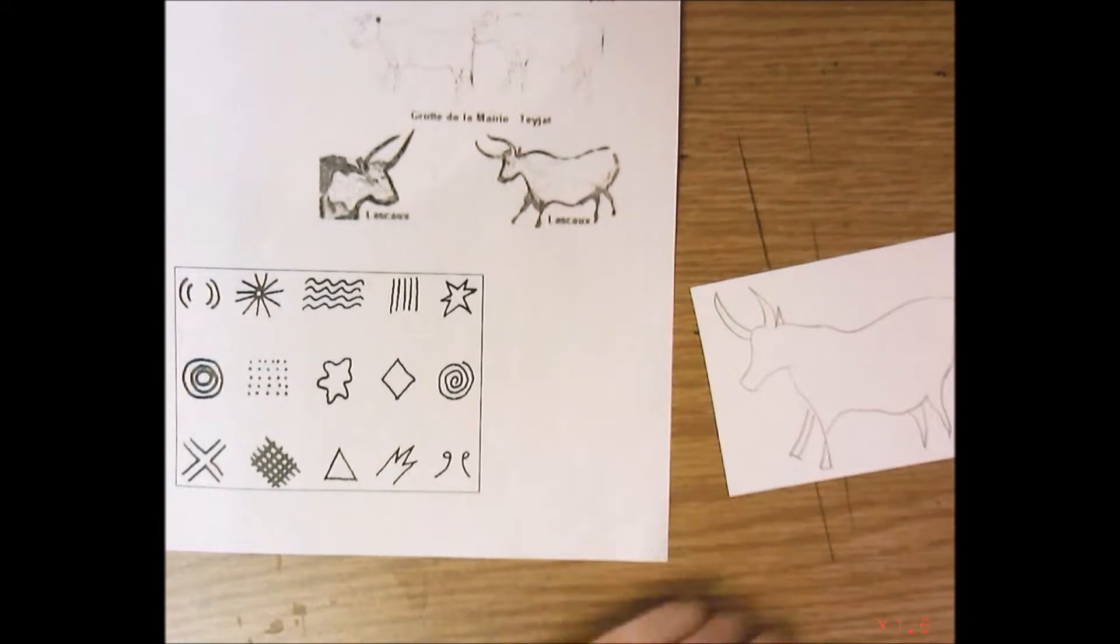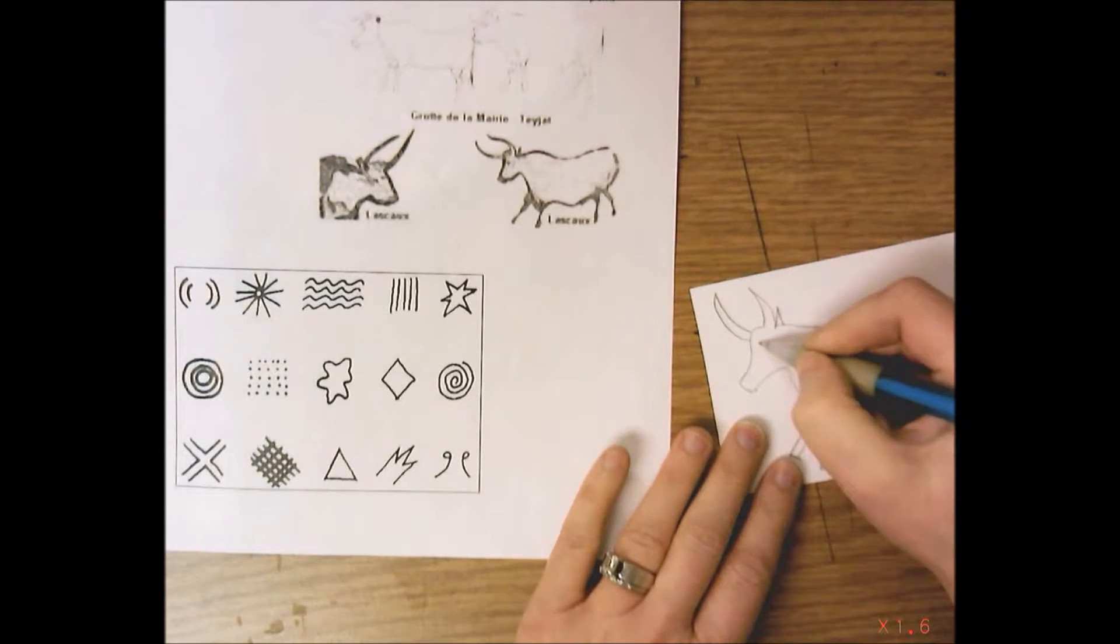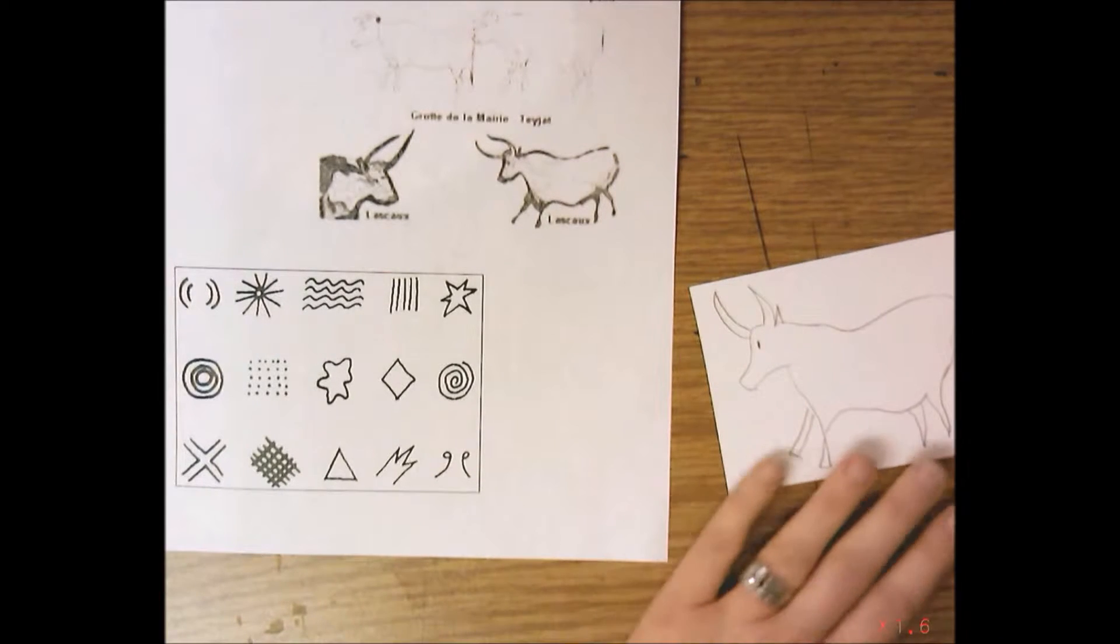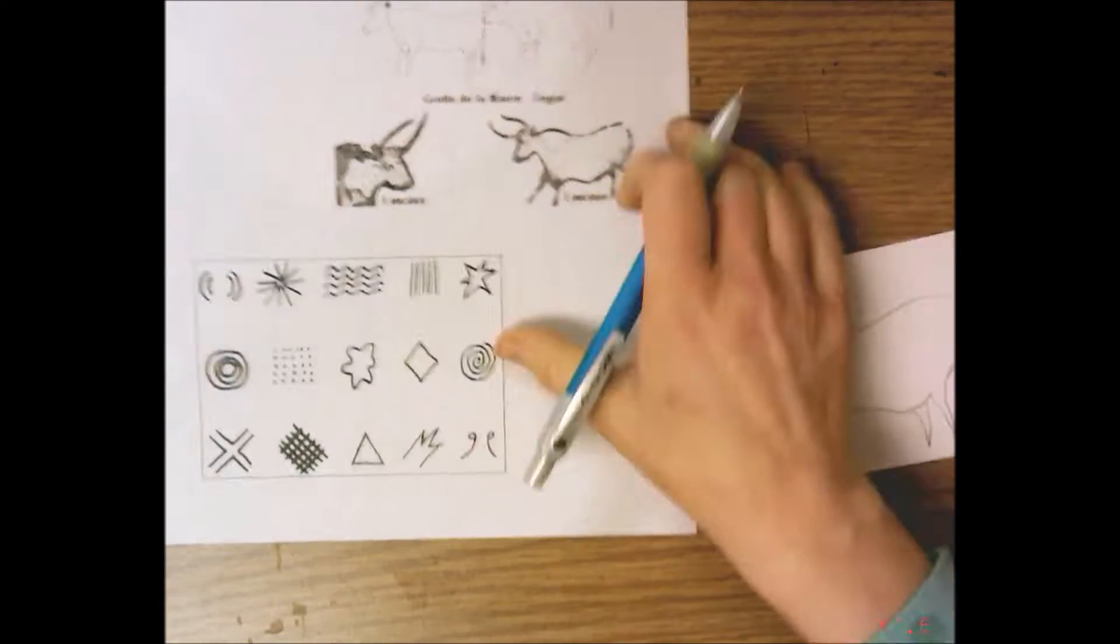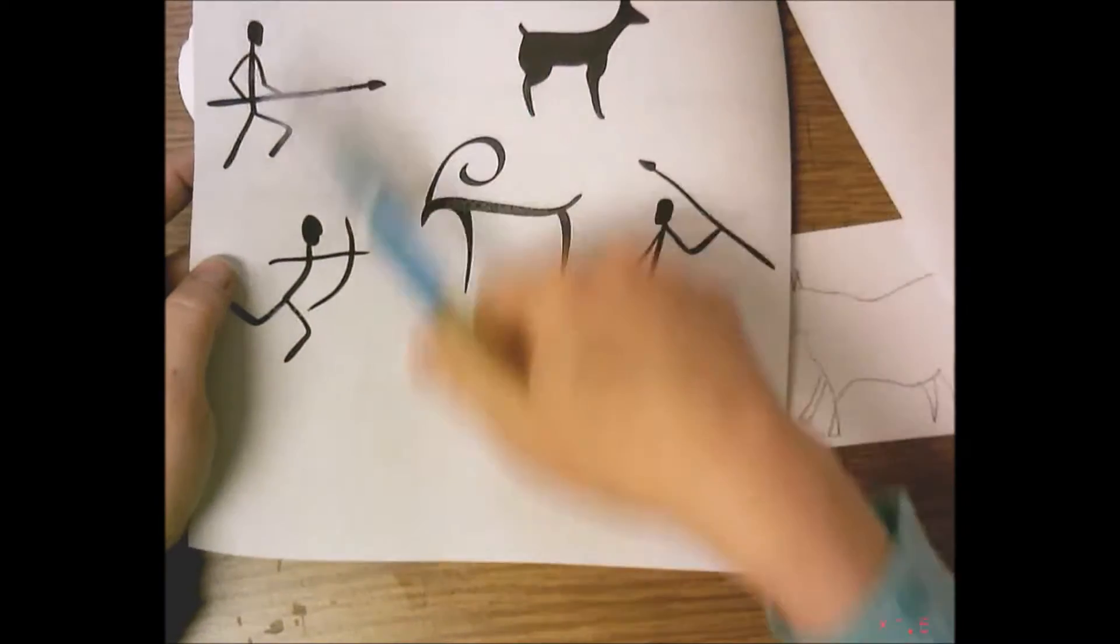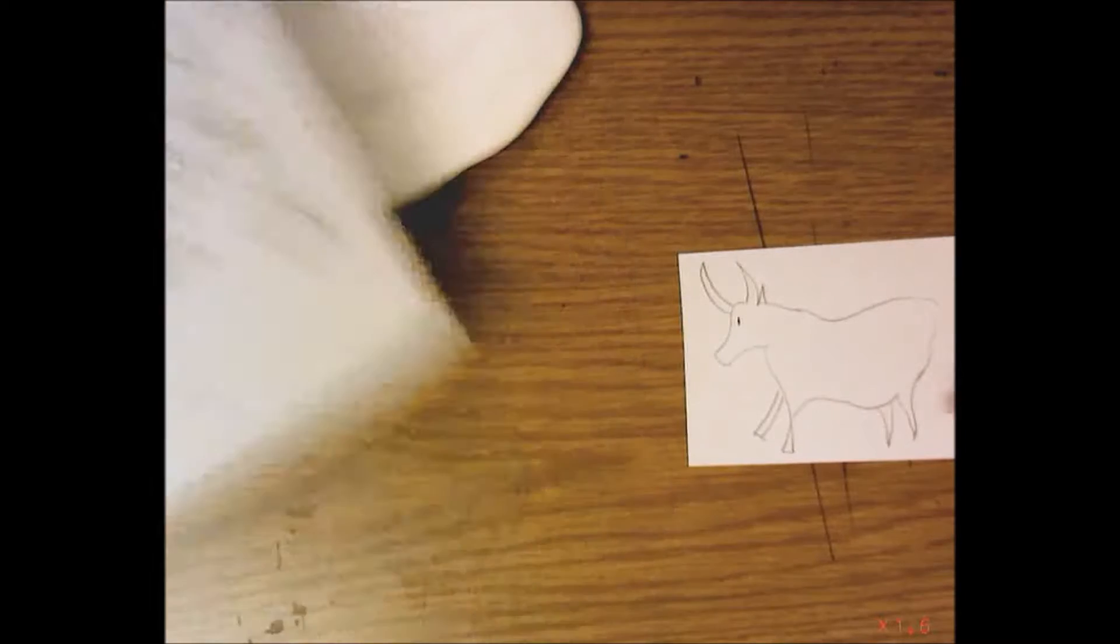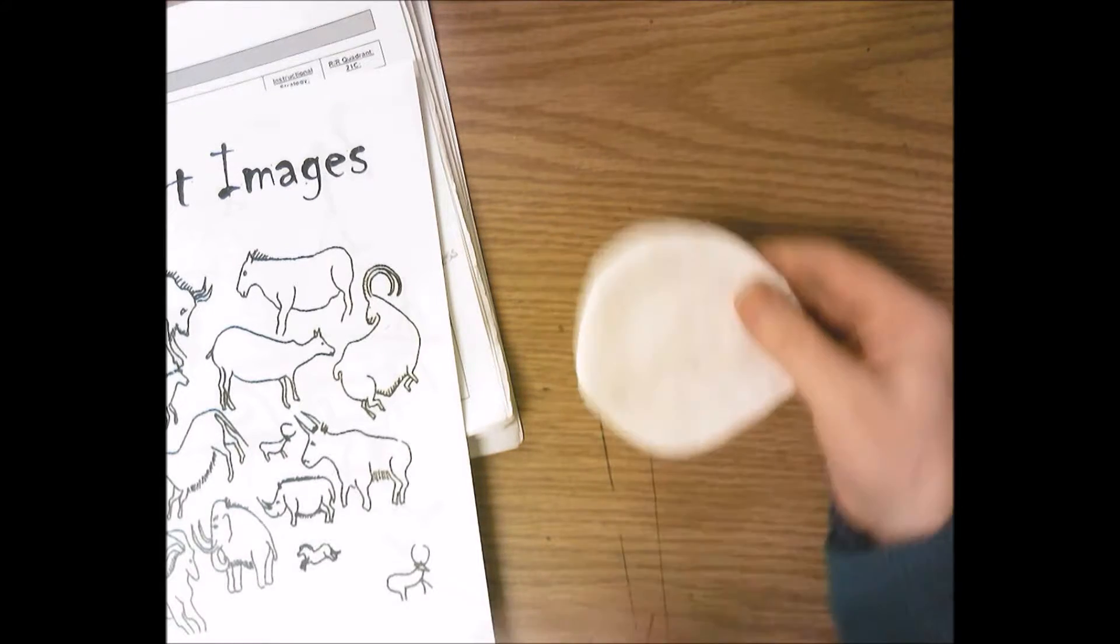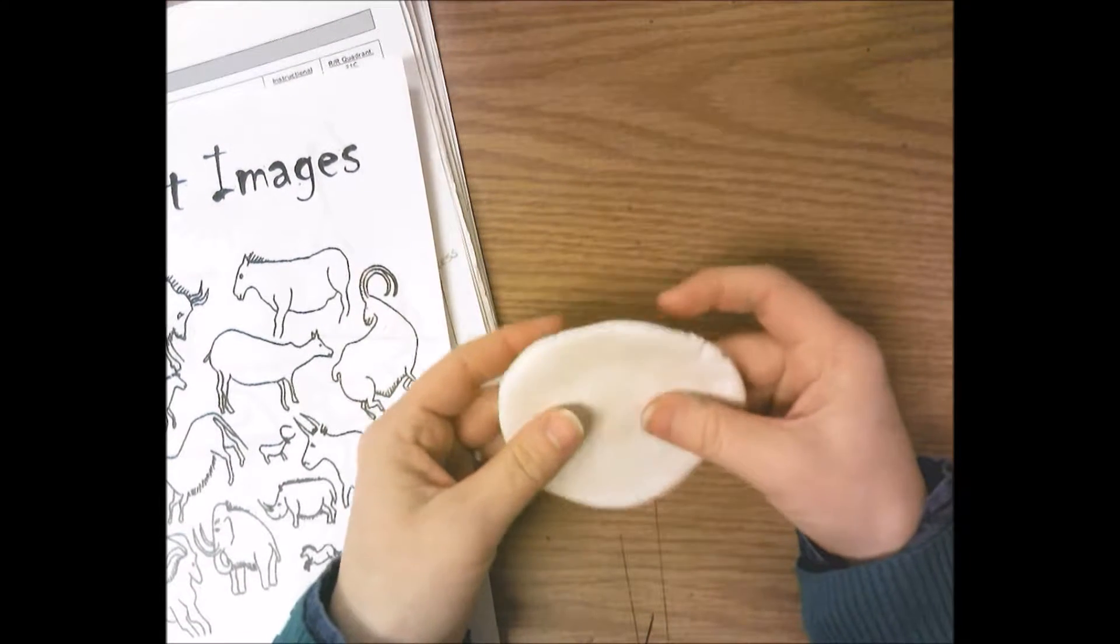I tend to draw things big, filling the space. If you draw your animal small, that's okay. You can add some of these other symbols or you could add some people. It's completely up to you. You could add another animal.